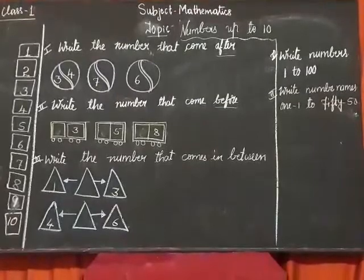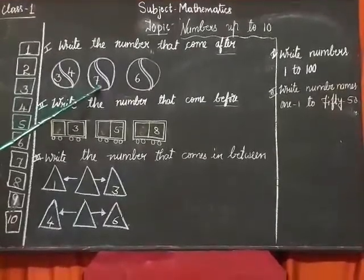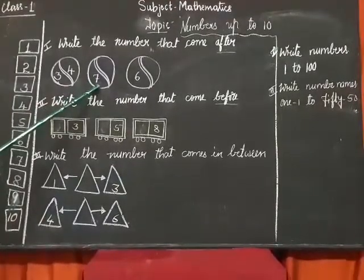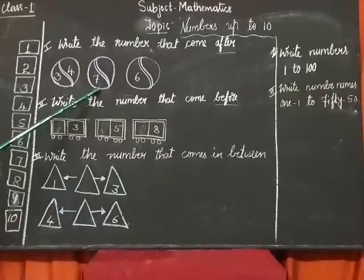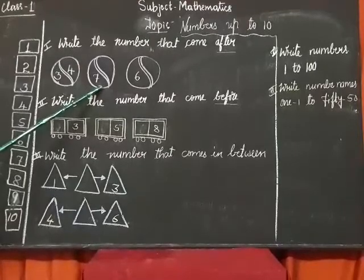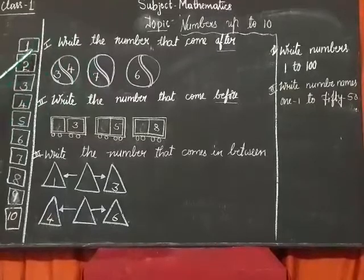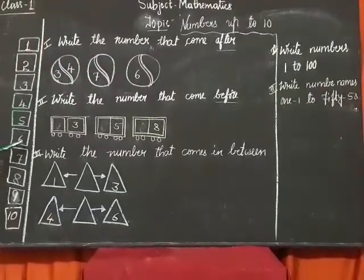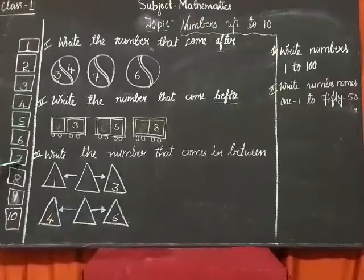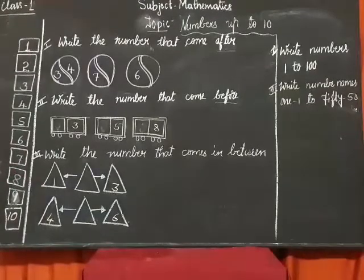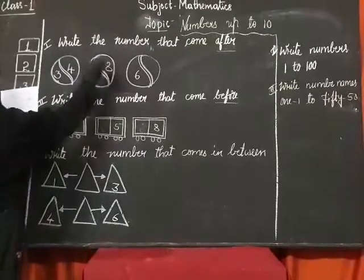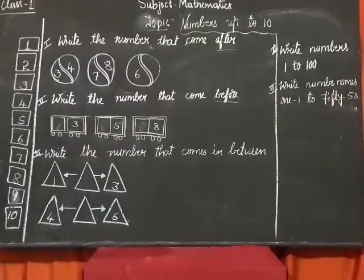Now you see the next ball. See the number 7. What comes after 7? Let me check here: 1, 2, 3, 4, 5, 6, 7, 8. What comes after 7? 8. Very good. Let me write here: 8. After 7 comes 8.